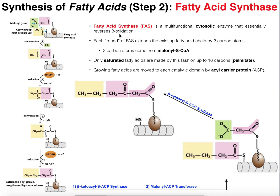If you remember the steps of beta-oxidation, we're breaking a fatty acid down: we have double bond formation, hydration of that double bond, oxidation of the resulting hydroxyl group, and then thiolysis with a coenzyme A which removes two carbons. What we're going to find is that fatty acid synthesis is the exact reverse. Rather than ending with a thiolysis, we begin with a condensation, then a reduction, a dehydration, and then another reduction of the double bond.